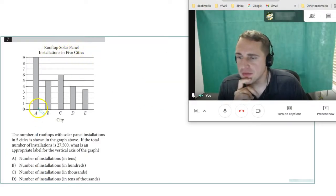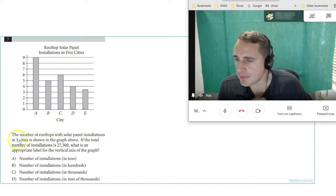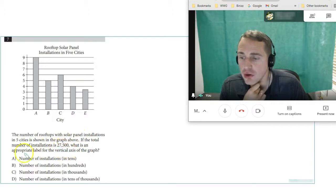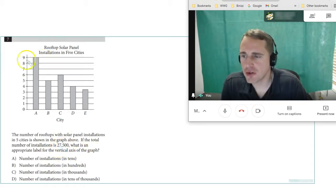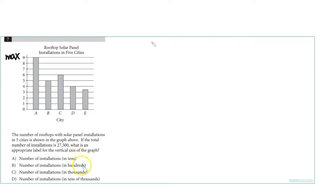Number 24: Rooftop solar panel installations in five cities. The total number of installations is 27,500. What's an appropriate label for the vertical axis? If we have 27,500 and this is 9 for the maximum value, notice the max is 9. Are we talking 10s, 100s, 1000s, or 10,000s? If this was 10,000s, there'd be 90,000, but that's bigger than 27,000, so that's incorrect. The max is going to be 9,000 if we do letter C. You see that 9,000, 5,000, 6,000, 4,000, 3,500 should probably give us 27,000.